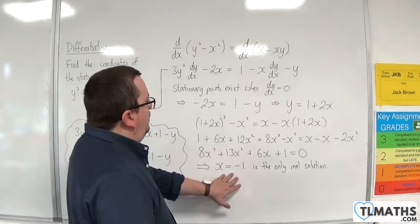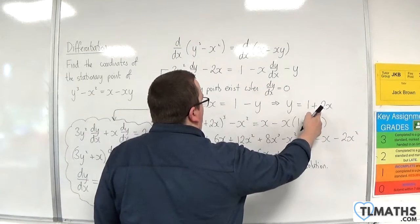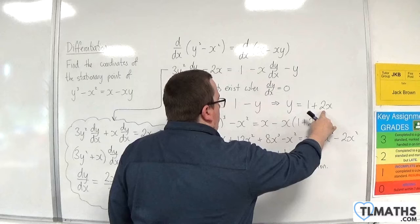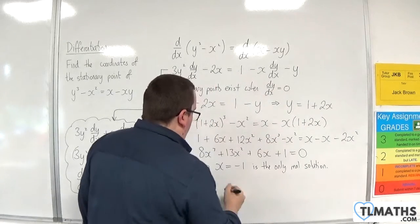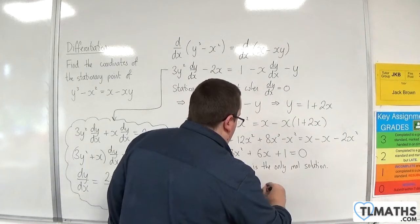So, when x = -1, we can work out y by substituting it straight into this one. So, -1, 1 + 2 × (-1) is -1, is the stationary point.